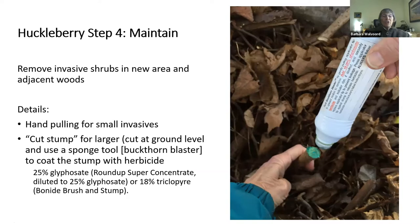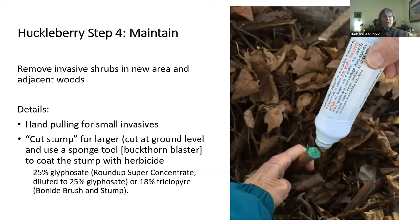Now we have to maintain these shrubs. One of the things we've been doing is removing invasive shrubs in the new area as they appear — and they will. In the adjacent woods, there was a hedgerow of trees and shrubs behind our chosen area with invasive plants. If we didn't get those out, they would be a constant problem. Residents did a lot of it, but we also hired one person for a day who really knew what he was doing. We hand-pulled the small invasives, but for the others we used the cut stump method — you cut the plant off at or near the ground, then coat the stump with herbicide using a sponge tool so there's no drip and no spray. It goes on the stem, makes its way down into the roots, and kills it.